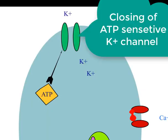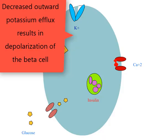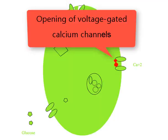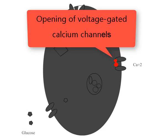Increased production of ATP closes ATP-gated potassium channels. Inhibition of efflux of potassium causes depolarization of the cell and opening of voltage-gated calcium channels.